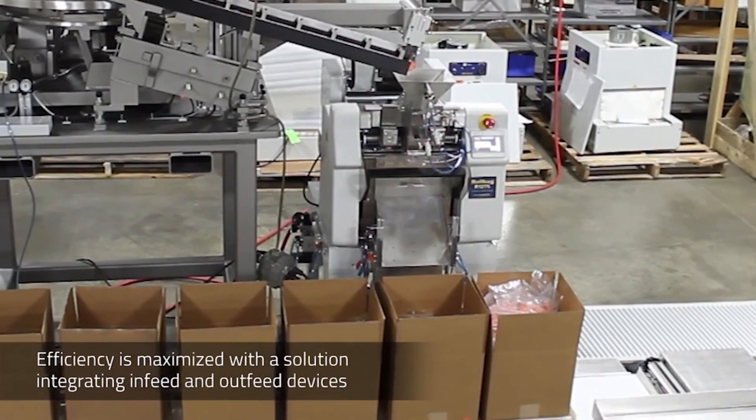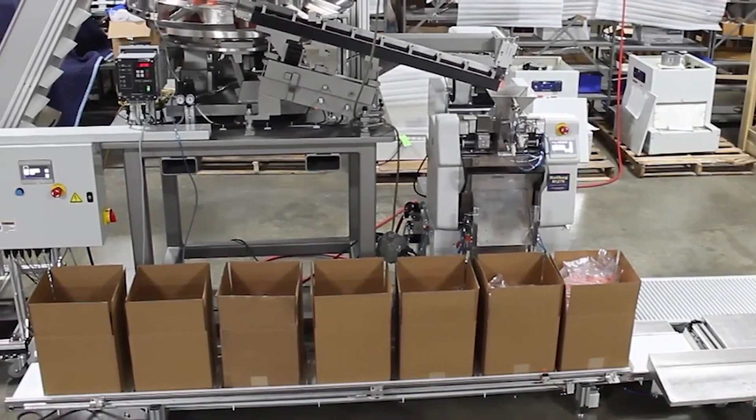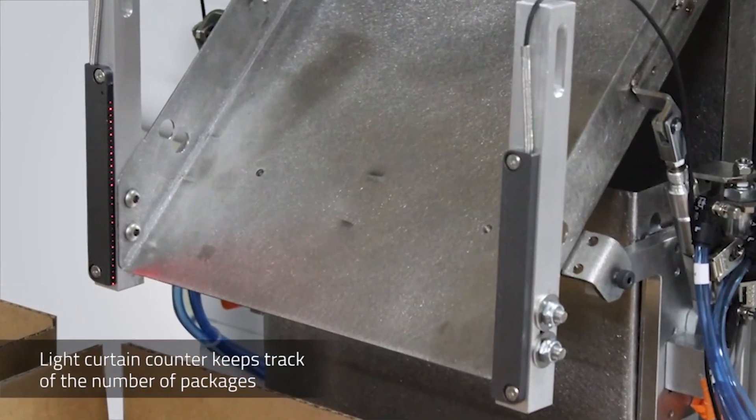Open boxes move down their own conveyor system, receiving a set amount of bags as each box reaches the automatic bagger.